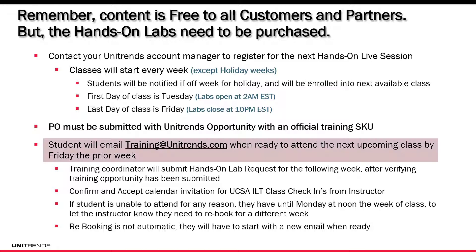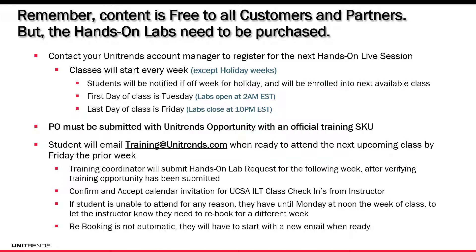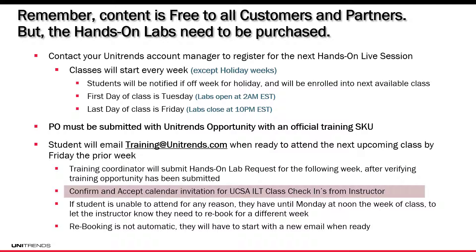When you're ready, email training@unitrends.com that Friday prior to when you want to attend the next upcoming class. The training coordinator will submit a hands-on lab request for the following week after verifying the training opportunity has been submitted and confirming that you've completed all your pre-work. Once you get that invitation, confirm and accept it for the UCSA instructor-led training class check-ins — they'll come from training@unitrends.com.